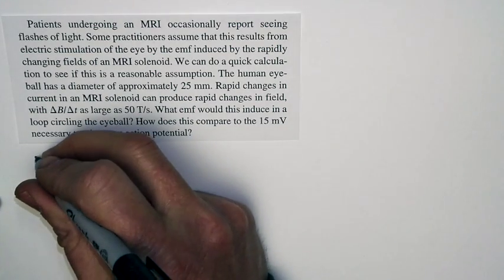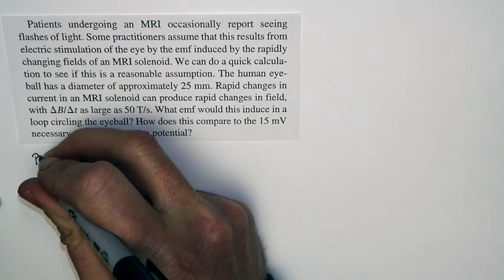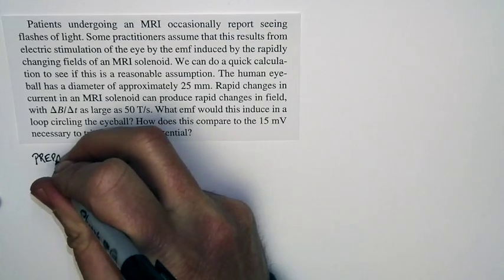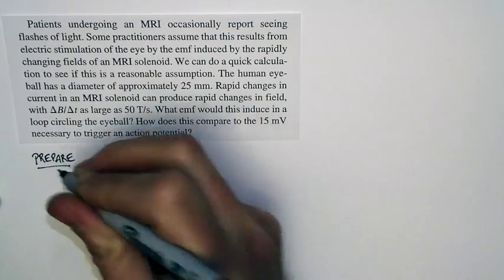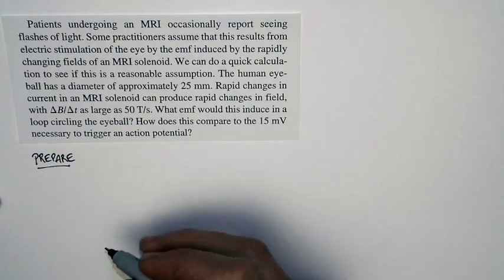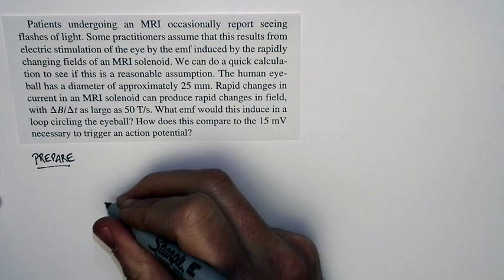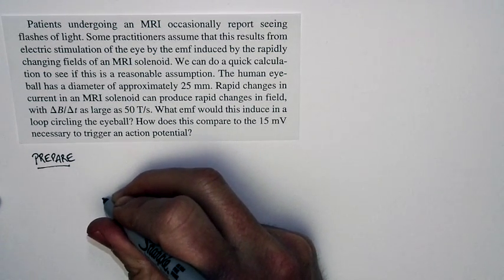Let's go ahead and set this problem up. Okay, so the problem asks about the EMF induced in a loop circling the eyeball when the magnetic field across the eyeball changes really quickly.